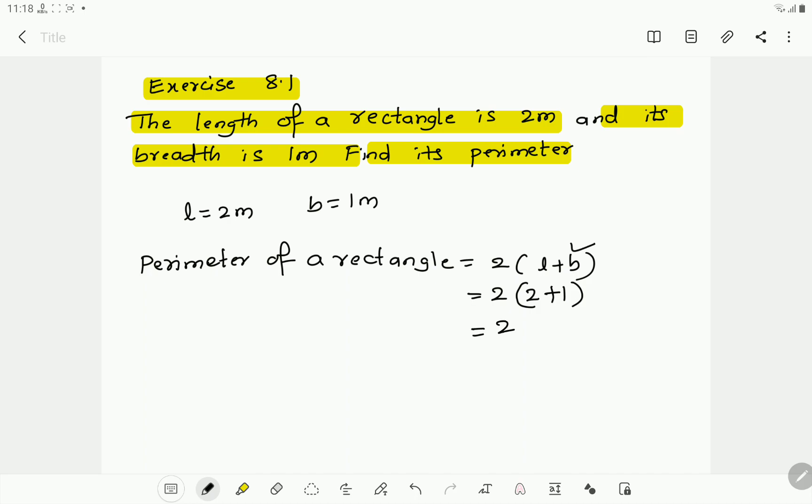Then 2 into, what is the sum of this 2 and 1? Sum of 2 and 1 is 3. Then you write 2 into 3 which equals 6 meters. So the perimeter of the rectangle with length 2 meters and breadth 1 meter is 6 meters.